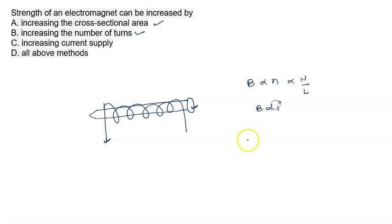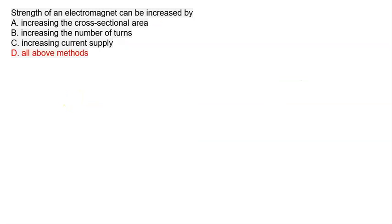Increasing current supply - magnetic field depends on the amount of current flowing through the solenoid, so it depends on option C also. Therefore all of the above, the right answer is option D, all above methods.